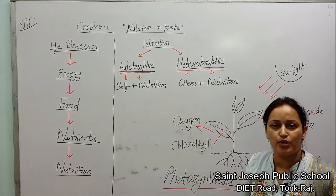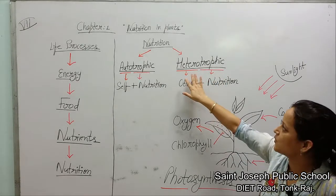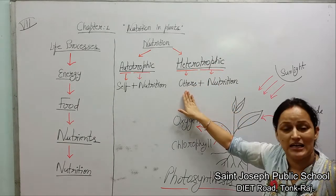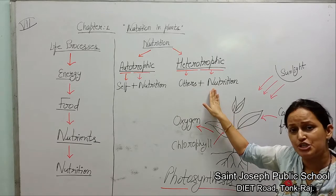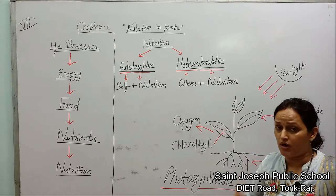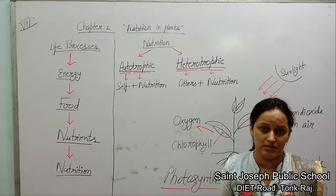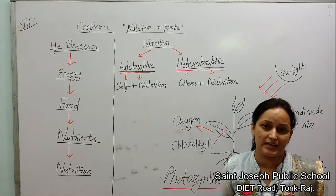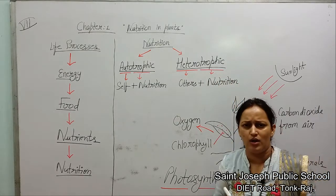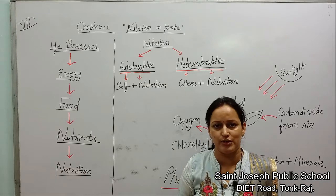Let's talk about the heterotrophic mode of nutrition. Again, this word is made up of two simple words: 'hetero' and 'trophic'. Hetero means others, and trophic means nutrition. So heterotrophic nutrition refers to organisms which cannot make their own food and are dependent on others, directly or indirectly. That kind of nutrition is called heterotrophic nutrition. All the animals, including human beings, are examples of heterotrophic nutrition.